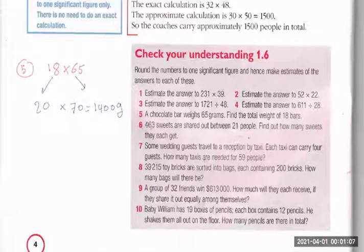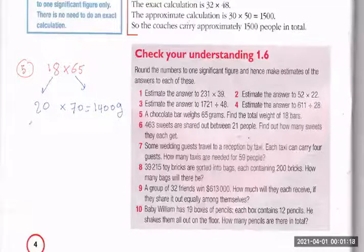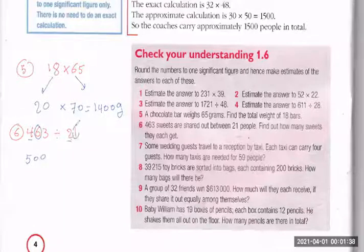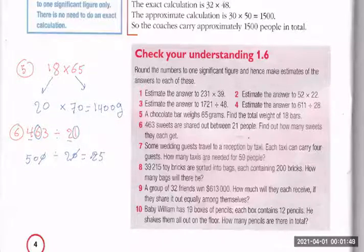Question number six: 463 sweets are shared between 21 people. Find how many sweets they each get. Since they are shared, we divide: 463 divide by 21. Round each to one significant figure — 463 becomes 500, and 21 becomes 20. Cancel a 10 with a 10: 50 divide by 2 is 25. So each person gets 25 sweets.